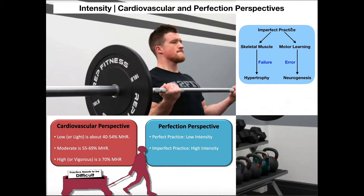There's another aspect where we can talk about imperfect practice, and that's with respect to skeletal muscle — more of the exercise physiology approach, which we don't normally discuss in motor learning. But I wanted to provide some additional context. Suppose this person doing barbell curls is doing 10 repetitions per set. If it were perfect practice, he'd be able to get all 10 repetitions with good form. But if he's doing imperfect practice, that would imply he only gets to repetition seven or eight and then fails — going till failure would be imperfect practice.